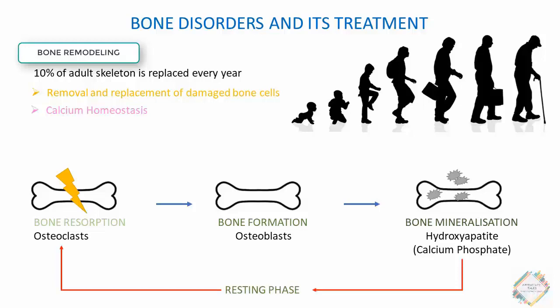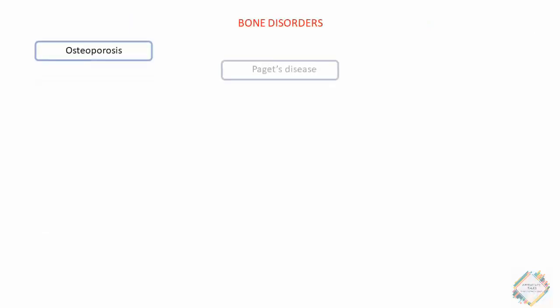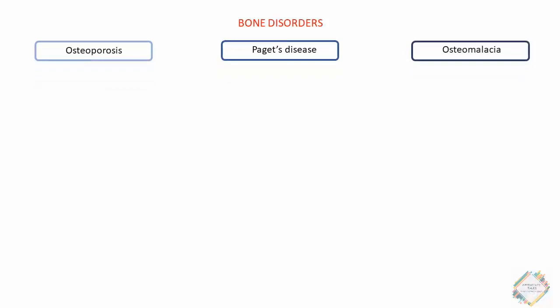After mineralization, the bone enters a resting phase until the remodeling cycle begins again. So the sequence is: bone resorption, bone formation, bone mineralization, resting phase, then the cycle continues. This remodeling process occurs throughout our life. Bone loss occurs when bone resorption exceeds bone formation during the remodeling process.